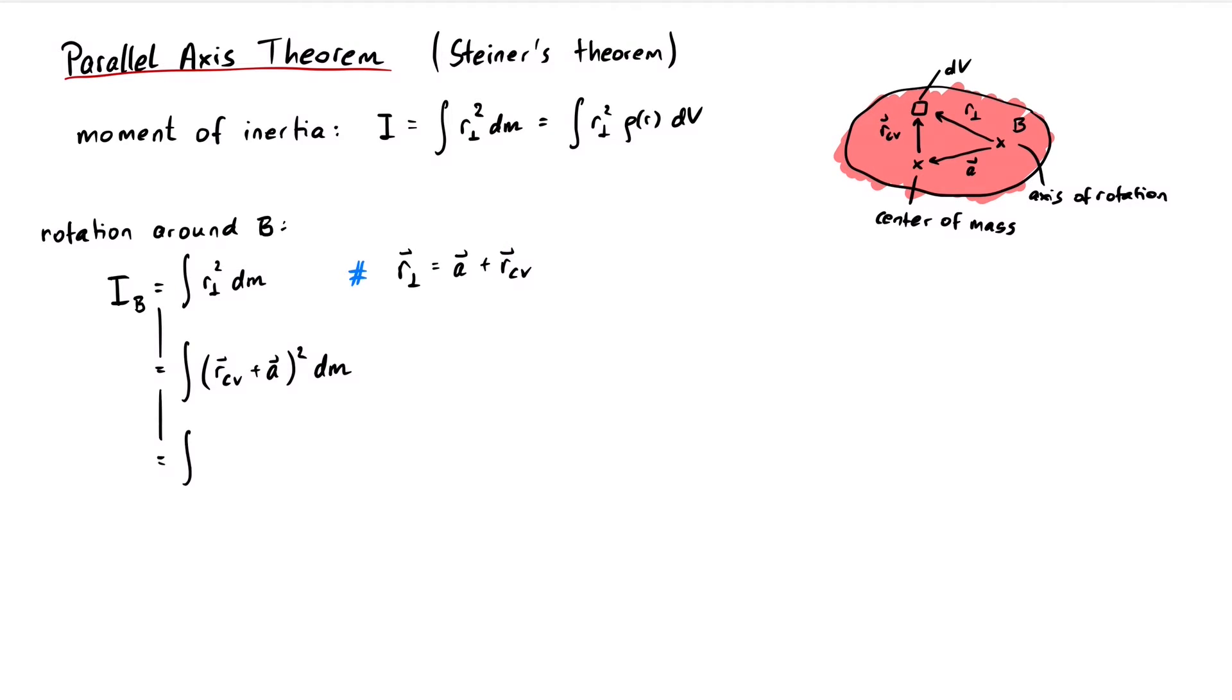If we expand this, we get three terms. The first one is simply the moment of inertia through the center of mass, since the vector r cv starts at the center of mass.